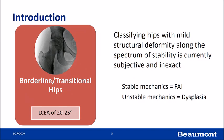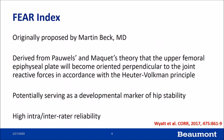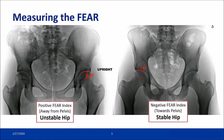We assume that stable mechanics could be associated with an impingement-type mechanical situation, and unstable mechanics can be associated with dysplasia or instability. The FEAR index was proposed by Martin Beck, published in 2017, and derived from Powell's and McKay's theory that the upper femoral epiphysial plate will become oriented perpendicular to the joint reactive force in accordance with the Huter-Volkman principle, potentially serving as a developmental marker for hip stability. Inter-rater reliability was quite good.